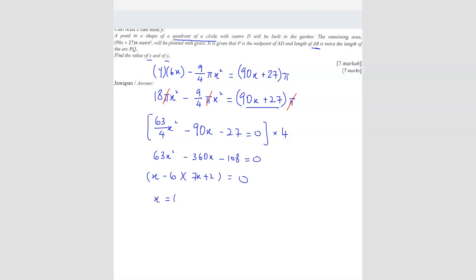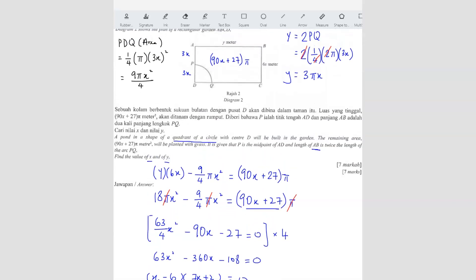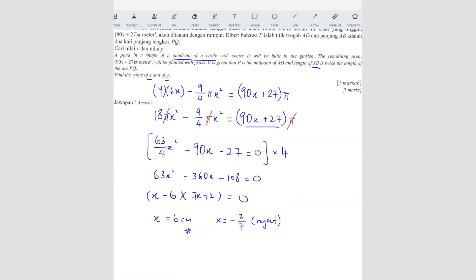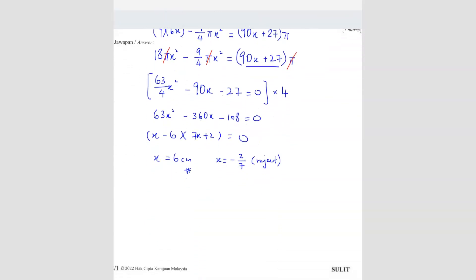So here is X equals to 6 CM. X equals to negative 2 over 7. So this doesn't make sense. So you have to reject this. So this is 6 CM. So they ask you to find X and Y. So now you have to find Y. Y equals to 3πX, which is what we found here. So just substitute, Y equals to 3π times X is 6. So you get 18π CM. Done. X and Y found.